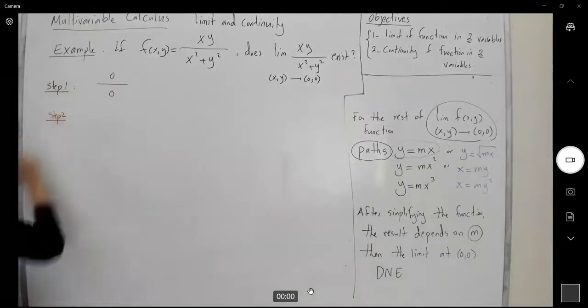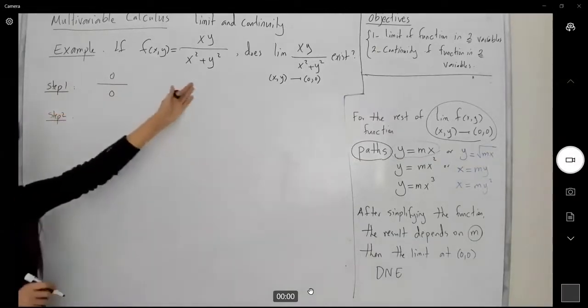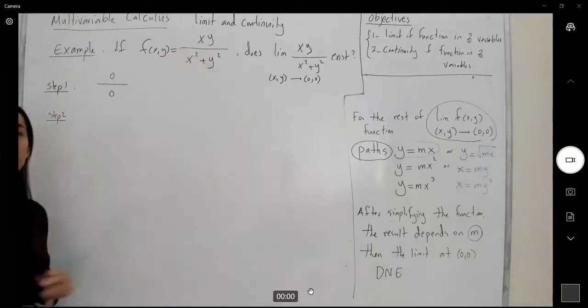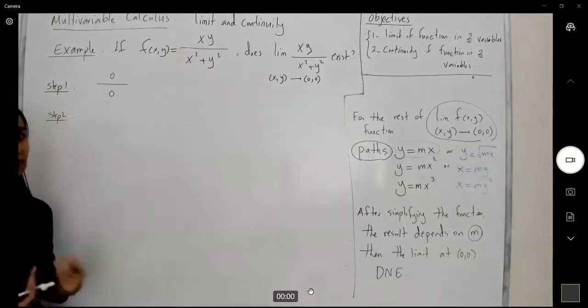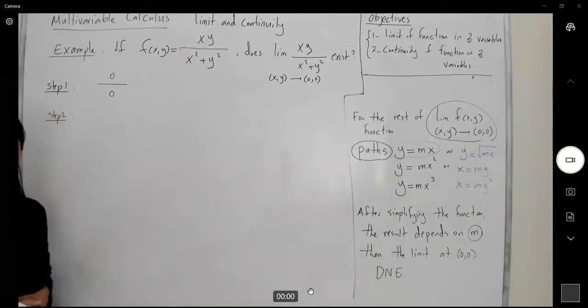Step two: can I simplify this function, xy over x squared plus y squared? We cannot simplify this function. It's not like our first example where we can find the conjugate of the denominator or numerator and simplify. So what are we going to do?